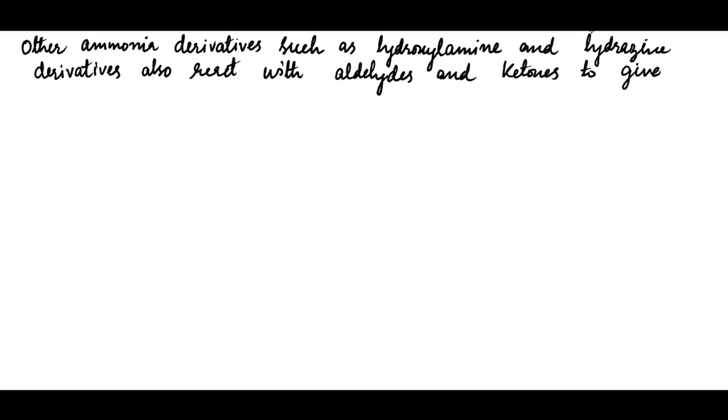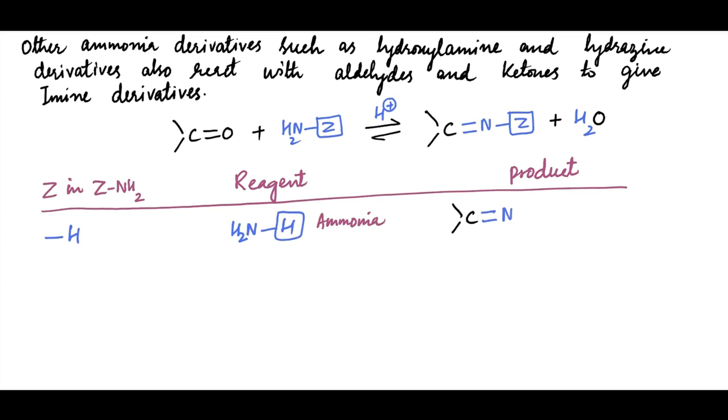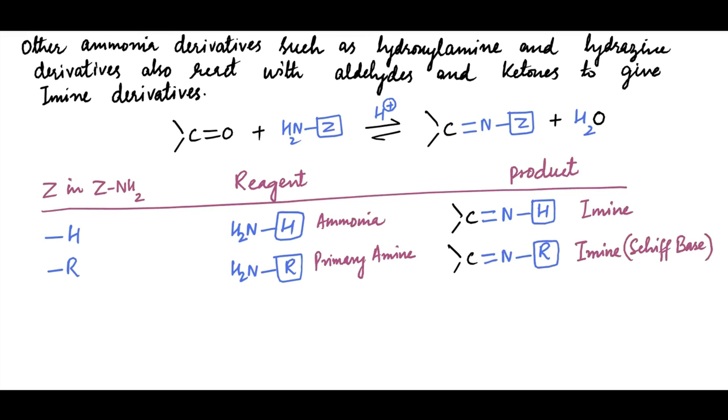Other ammonia derivatives such as hydroxylamine and hydrazine also react with aldehydes and ketones to give imine products. Consider this general reaction of imine formation. The identity of Z will determine the reagent which will determine the product imine. If Z is H, reagent is called ammonia, and the product is called imine. If Z is hydroxyl group, reagent is called hydroxylamine, and the product is called oxime.